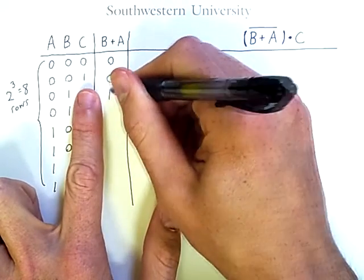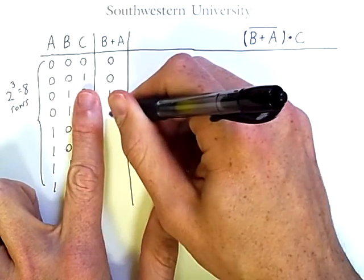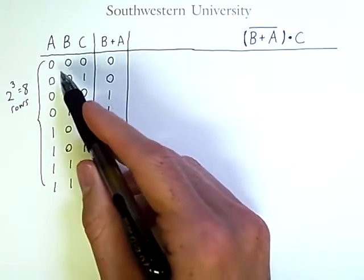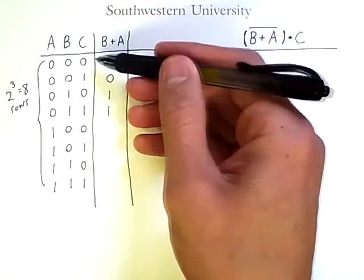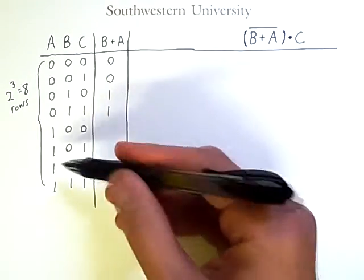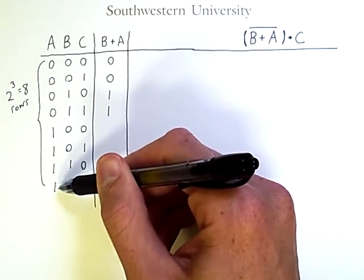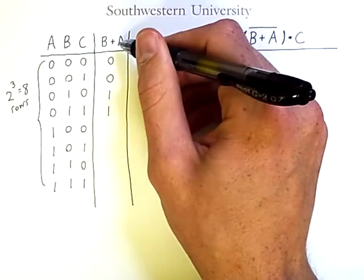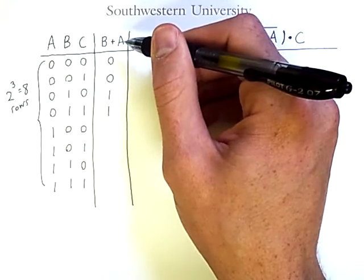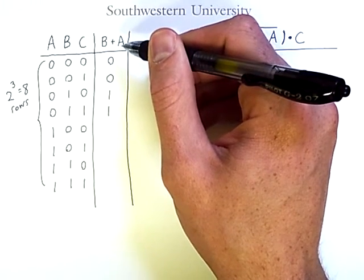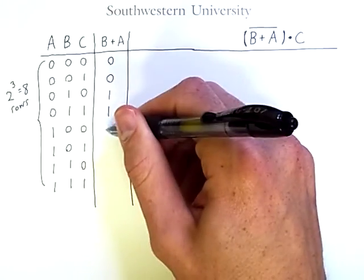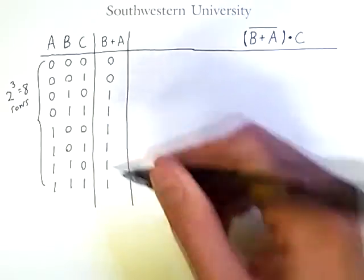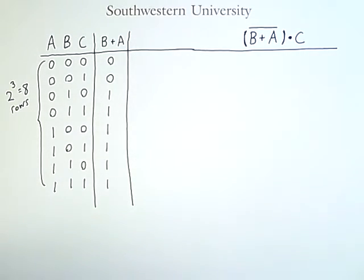And now, note that because of how I've written out these values, counting in increasing binary order, all of the last four rows have a 1 in the A column. So we're computing an OR. So 1 is sufficient to make the whole expression have a result of 1. That means I can quickly fill these out without having to look at the individual rows.